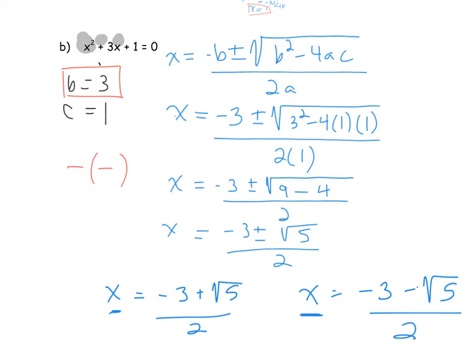Another thing worth mentioning: sometimes you end up with something that can be reduced to lowest terms. For instance, if you had a 2 in the numerator and a 6 in the denominator, both divisible by 2, there's an opportunity to reduce. It doesn't happen very frequently at the grade 10 level, but just be aware when comparing your answers.